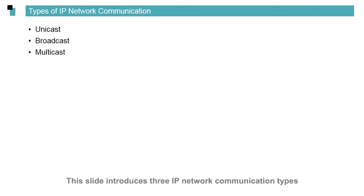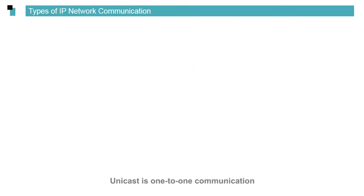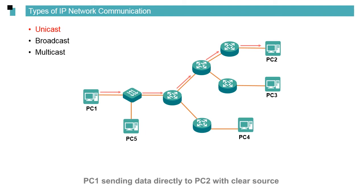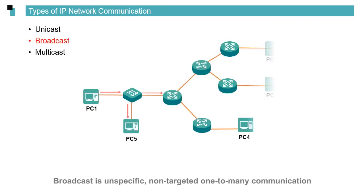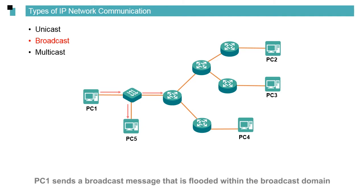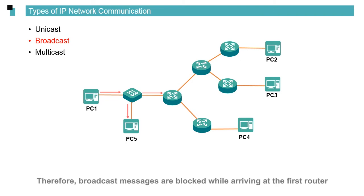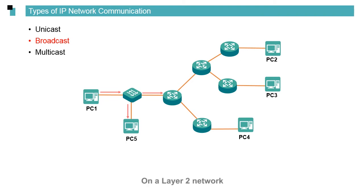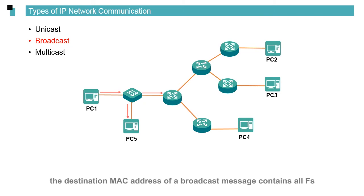This slide introduces three IP network communication types. Unicast is one-to-one communication. PC1 sending data directly to PC2 with clear source and destination IP addresses is an example of unicast. Broadcast is unspecific, non-targeted, one-to-many communication. For example, PC1 sends a broadcast message that is flooded within the broadcast domain, but routers are able to isolate the broadcast message. Therefore, broadcast messages are blocked at the first router. On the Layer 2 network, the destination MAC address of a broadcast message contains all Fs. On the Layer 3 network, the bits of the destination IP address are all 1s.